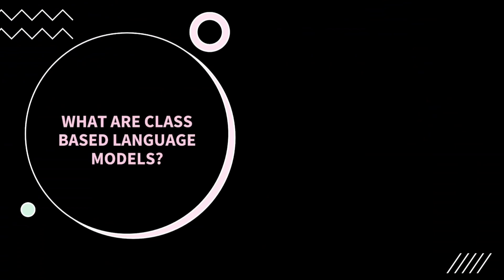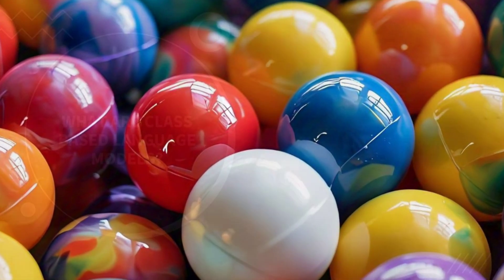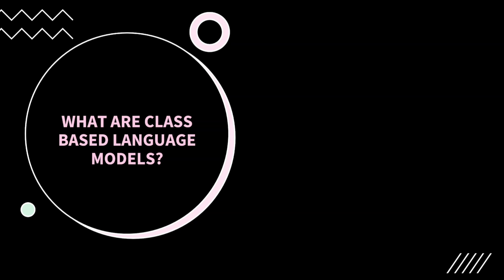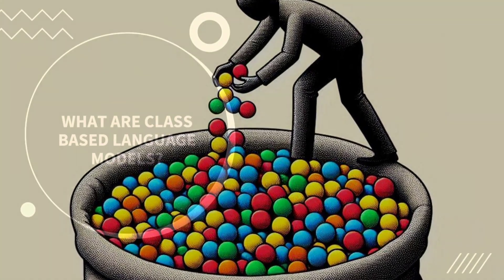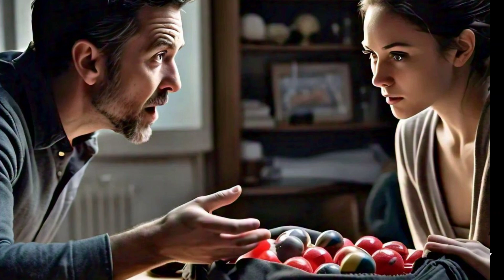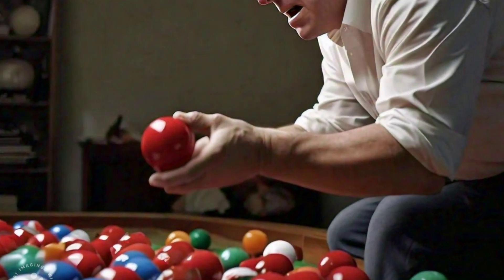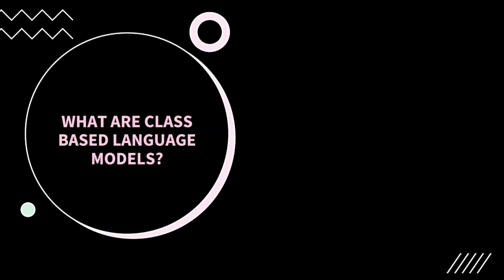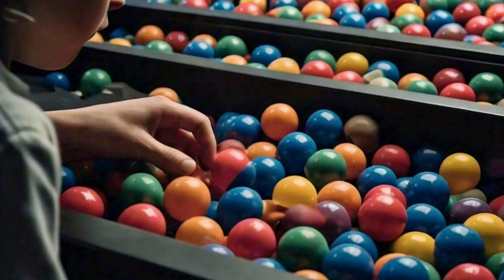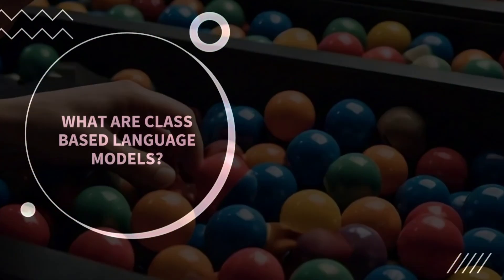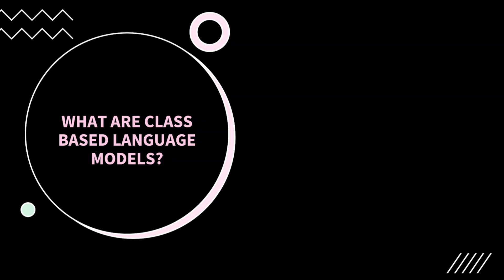What are class-based language models? Let's understand this with an example. Let's assume that you have different colored balls stored in a big black box. Now I ask you to pick a red ball for me. What you will do is go to that box and pick a ball, then check whether it is a red ball or not. If it is not a red ball, you will pick another ball and check again.